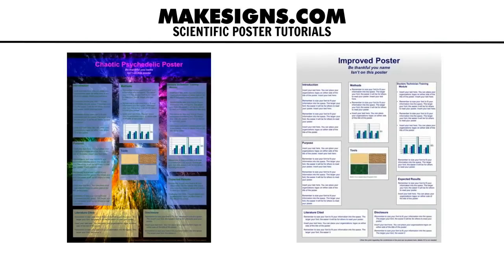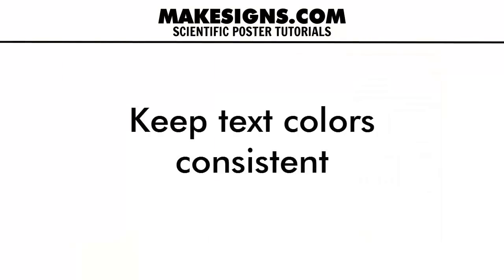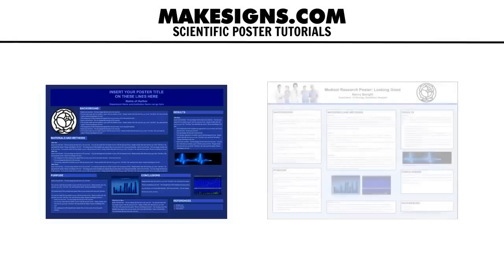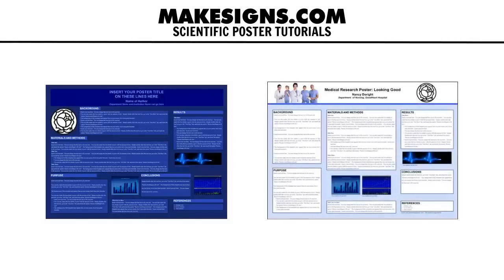As far as text color is concerned, be consistent throughout your poster. If you use a specific color for your poster's title text, use the same color for your subheadings. White text on a dark background is tough to read and it tires the eyes. Here's the same poster with dark text on a lighter background — the difference is night and day.